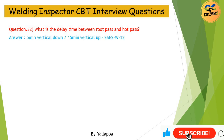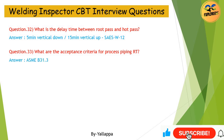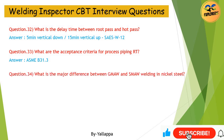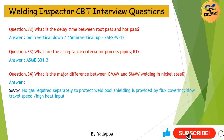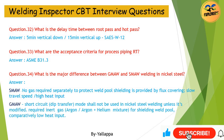Question 33: What are the acceptance criteria for process piping RT? Answer: ASME B31.3. Question 34: What is the major difference between GMAW and SMAW welding in nickel steel? Answer: SMAW — no gas required separately to protect the weld pool; shielding is provided by flux covering; slow travel speed and high heat input. GMAW — short circuit mode shall not be used in nickel steel welding unless modified; requires inert gas for shielding the weld pool; comparatively low heat input.